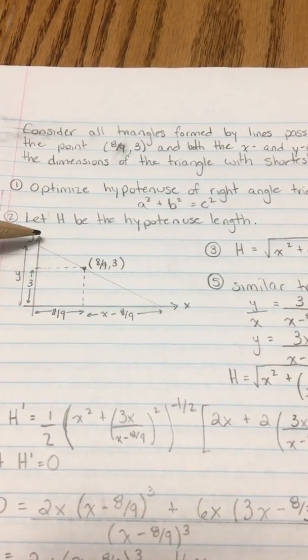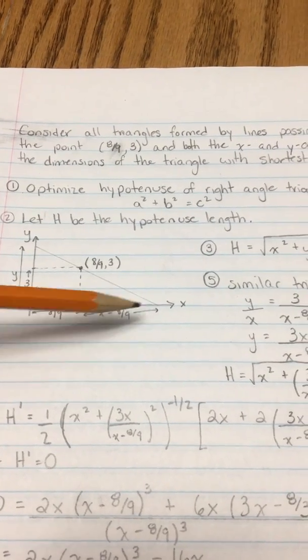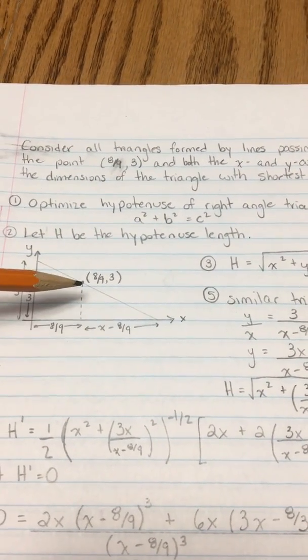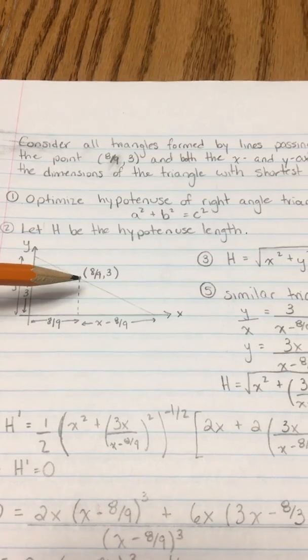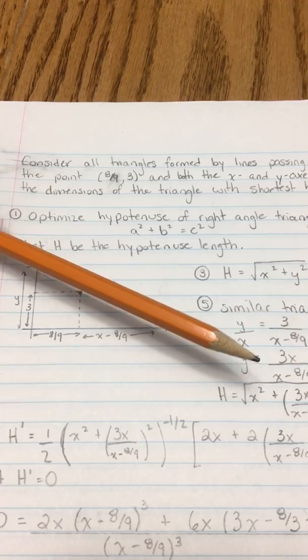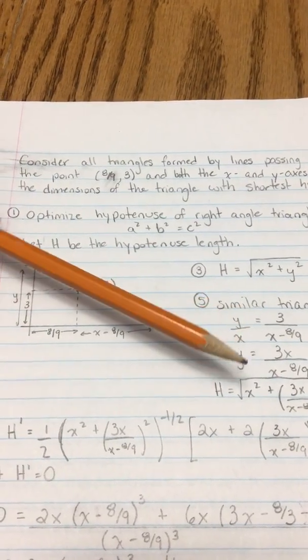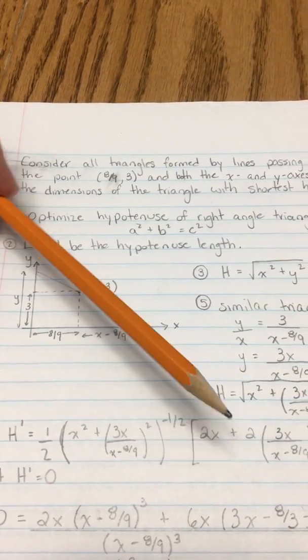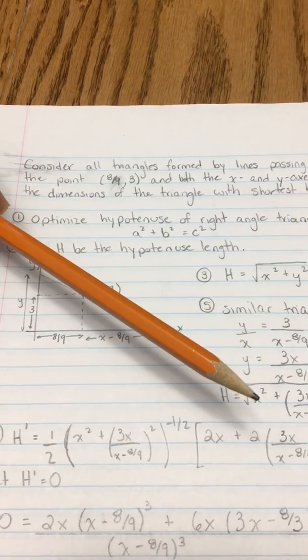It's showing us that we have the y-axis and the x-axis and the point (8/9, 3), and if we connect the three things we can form a right angle triangle. We're not sure which angle of the pencil is going to make the shortest hypotenuse, but one of them will.